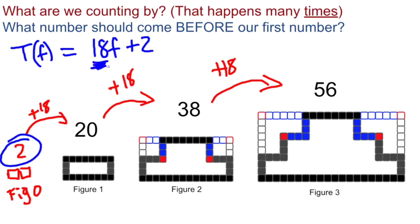The number that we're counting by times the figure number plus what was figure number zero. All right, and then this is how that works, right? For figure number zero, of course, F is zero and my answer is two, right?